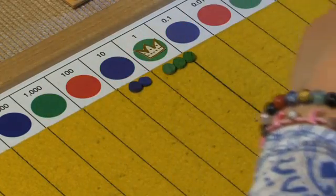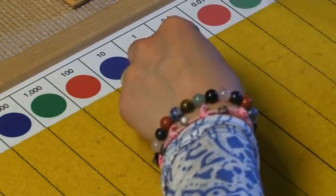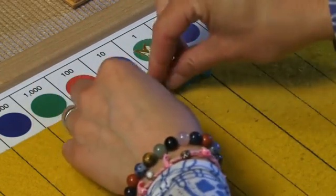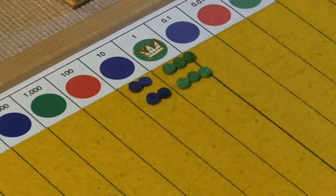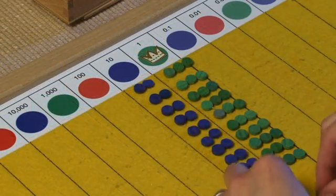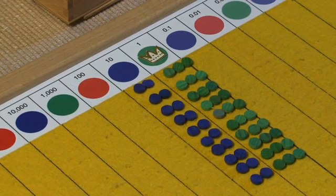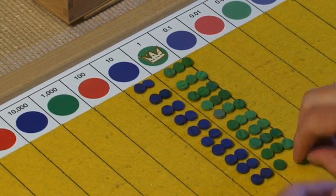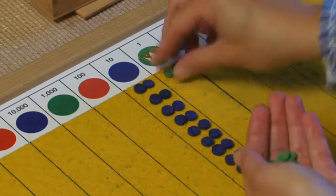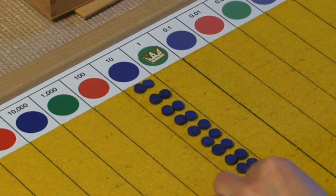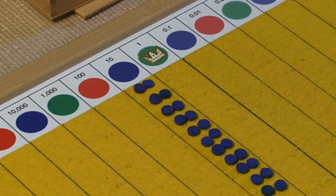There's 23 one time, 23 two times, 23 ten times. Then I would invite the student to begin exchanging ten units for one ten. Then they would begin exchanging their tens, ten tens for one hundred.